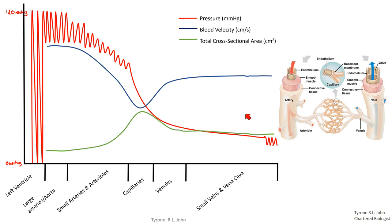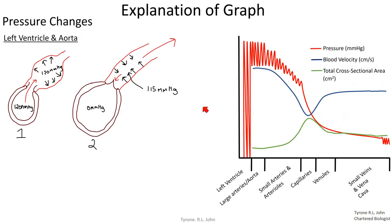We now need to go into the explanations for why these factors change. I'll be using a diagram on the right, linking the explanations with the graph. You should draw out a summary table of the graph description to put in with your notes. On this slide we're going to look at the explanation of the pressure changes in the left ventricle and the aorta together, since they are very much linked.